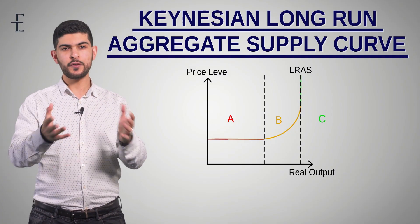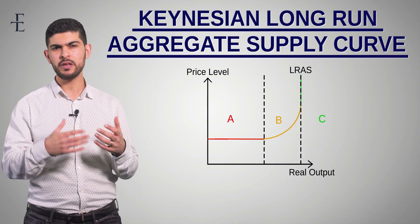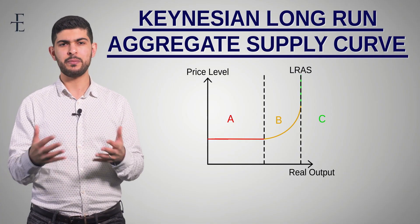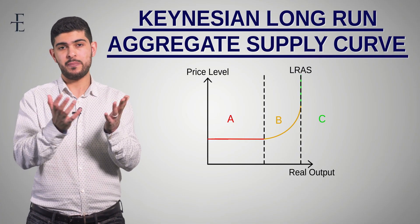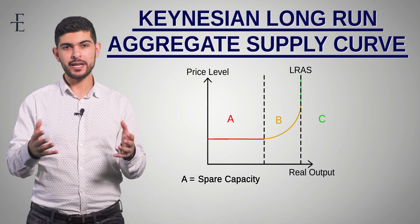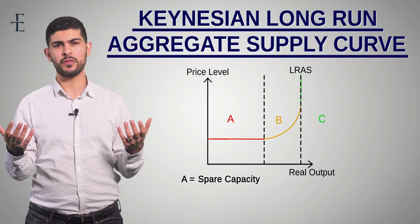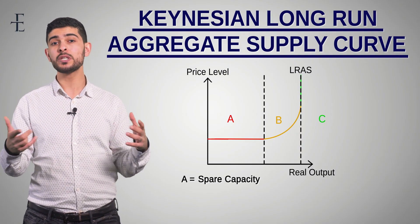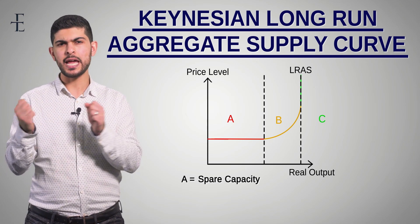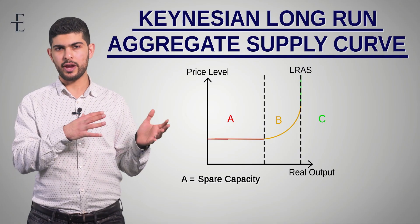If you're at Section A, your economy is not doing particularly well, because it's pretty far away from the maximum level of output it is capable of producing. In terms of a PPF, we are inside the PPF. The name for Section A is spare capacity, and it is characterized by: stagnant economic growth — next to no growth; high levels of unemployment; and idle machinery, where machinery is just sitting there not being used.